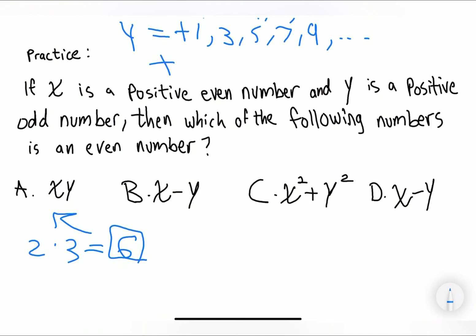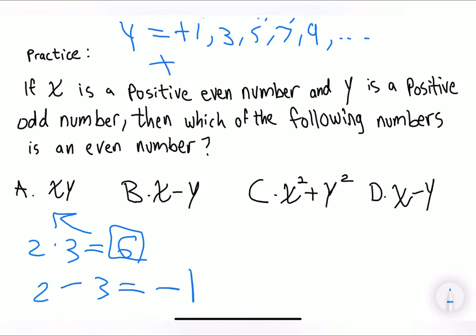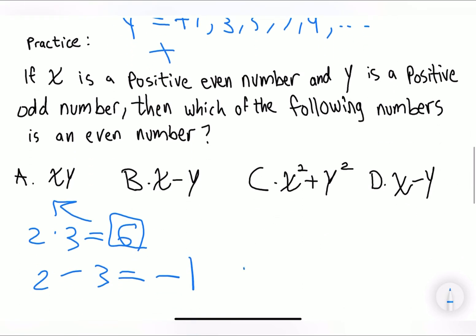Since we already chose 2 and 3, we're going to continue. So 2 minus 3 is equivalent. It's going to be a negative. It's going to be negative 1. And 1 is an odd number. So B cannot be the answer.